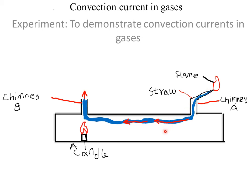In the procedure, we light the candle beneath chimney B and place a smoldering straw at the mouth of chimney A. It is observed that smoke is drawn through chimney A and exits through chimney B. The candle heats up air above it, which becomes lighter and rises up through chimney B. Cold, dense air is drawn through chimney A, carrying along the smoke, replacing the lighter air leaving through chimney B.